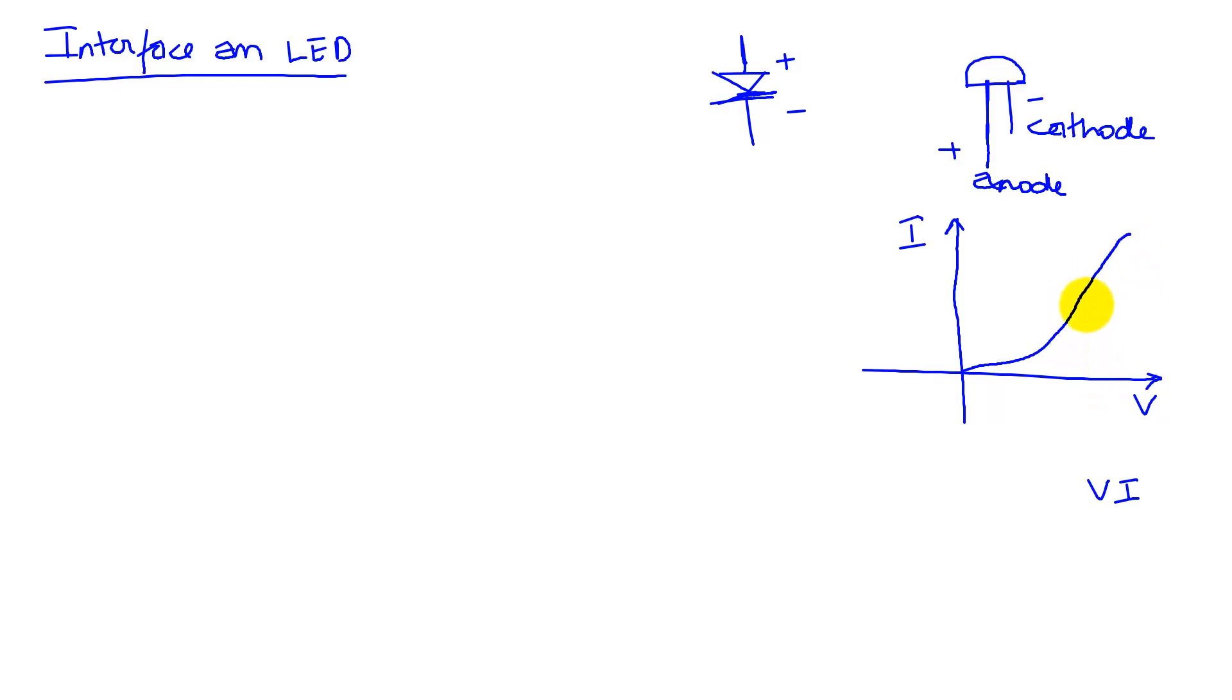What that means is on this curve, we have an operating point. The manufacturer often tells us that if you want to get the best out of your LED, operate it at this point. This is some VD-ID point. This is what we're going to target our circuit to use when we set it up, when we build it.